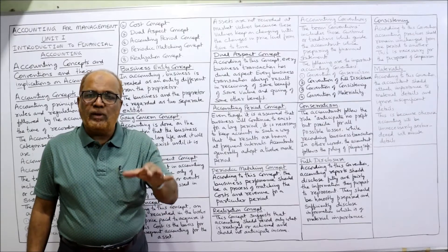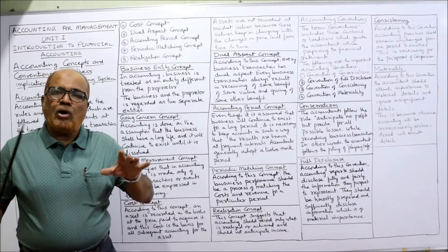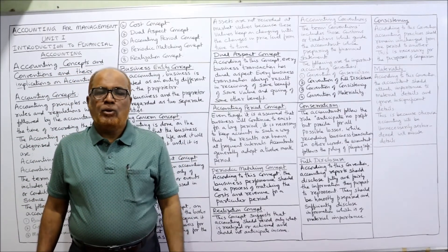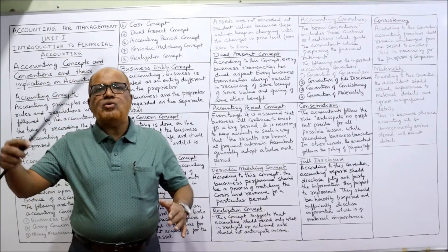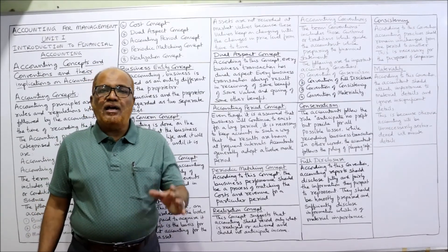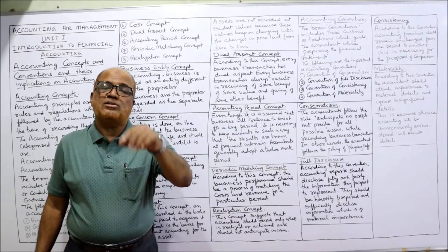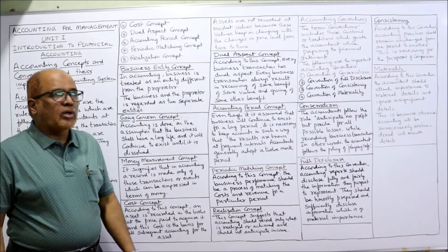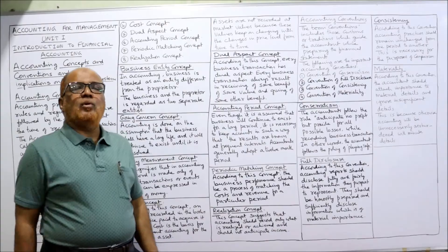Next comes the realization concept. This concept says whatever we have actually earned must only be taken into account during the accounting period. Anticipate all losses, but don't anticipate any gain. If a gain is going to occur in the future, don't record it until and unless it is realized. If there is a possibility of loss, it should be recorded. That completes all eight accounting concepts.